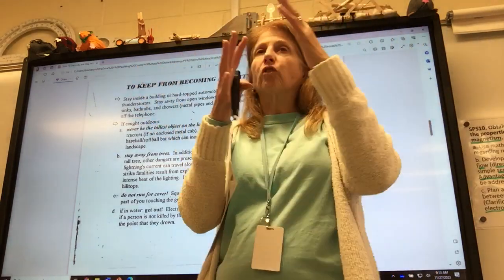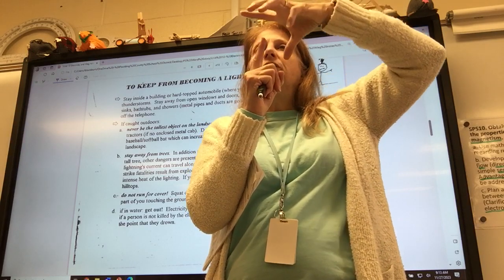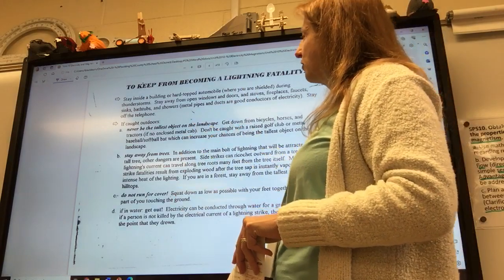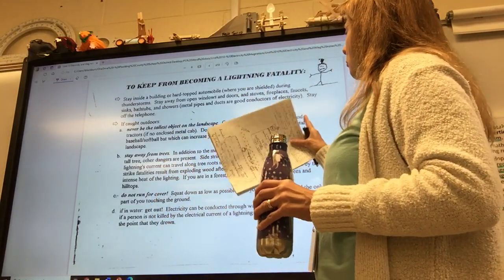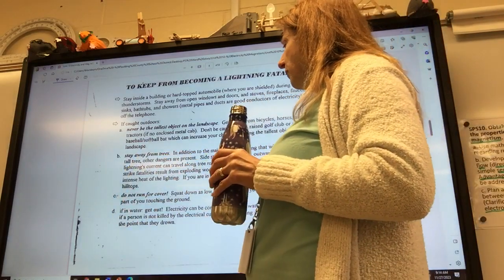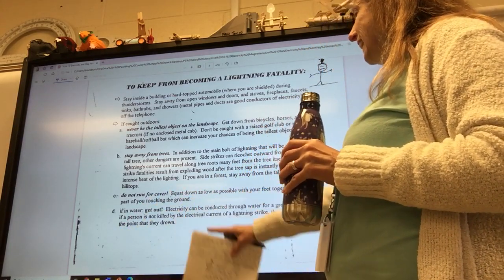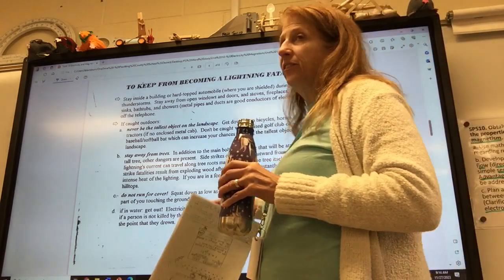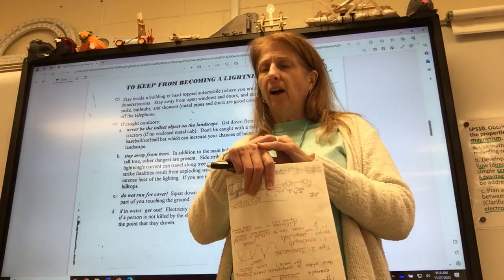Don't go stand under trees. Trees are tall and round on top. If you're standing under a tree and it gets hit by lightning, the lightning goes all down in branches, and you're going to be hit too. So get down from bicycles, horses, and tractors. Don't be caught with the raised golf club. A lot of people get killed out in the golf courses every year. Stay away from trees. Don't run for cover. Squat down as low as possible with your feet together and the only part of you touching the ground. If you're in water, get out. Electricity can go through water for a great distance. Even if a person is not killed by an electric current or a lightning strike, they can be stunned and then drown.